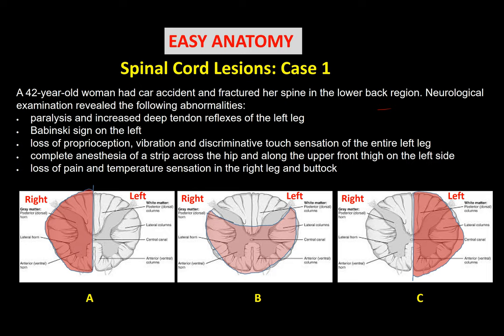Ask yourself: which tract carries deep sensation, and how does it travel from the periphery to the brain, and where does it cross? Additionally, there is complete anesthesia over a specific area — the hip and front of the thigh — corresponding to dermatomes L1 and L2. Finally, there is loss of pain and temperature sensation in the right leg and buttock. So we have deep sensation loss on the left and pain/temperature loss on the right.